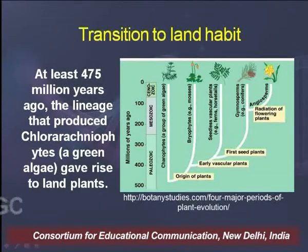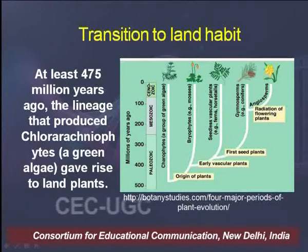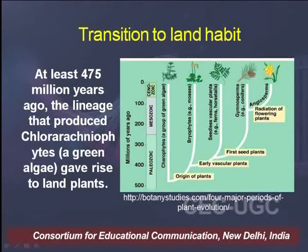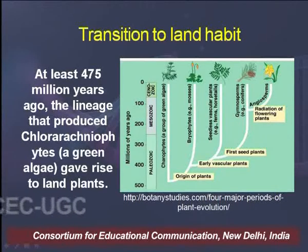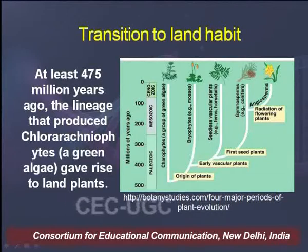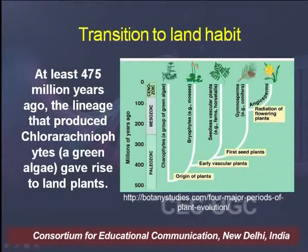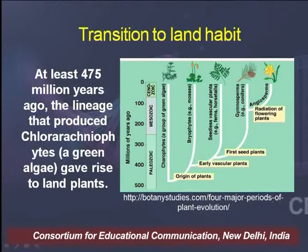One of the descendants of green alga gave rise to a group of green alga called carophycens. Carophycens gave rise to a group of land plants also termed as bryophytes, tracheophytes, gymnosperms, and angiosperms. This transition from aquatic habitat to land habitat took place at least 475 million years ago.